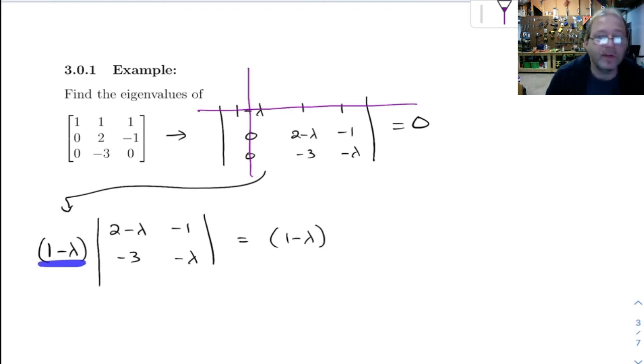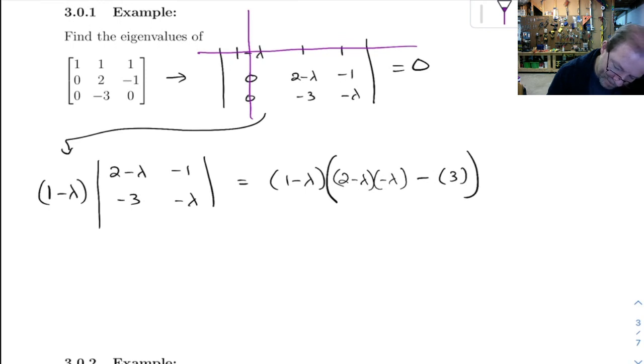And I mean, notice this already gives us one eigenvalue. But let's see, when we work this out, you get 2 minus lambda times negative lambda, minus negative 1 times negative 3. I didn't leave a lot of space here.